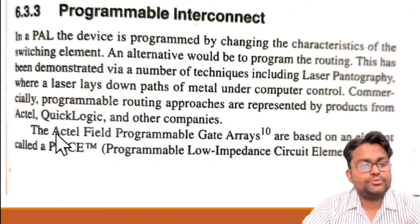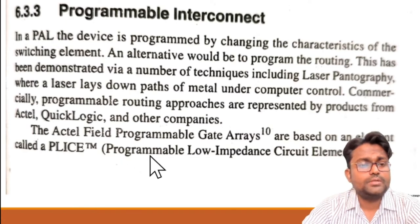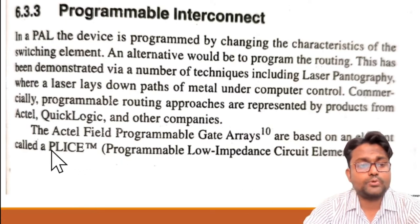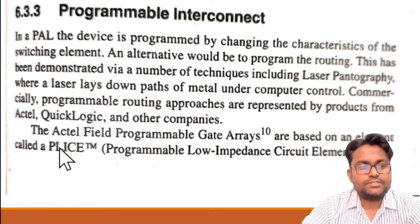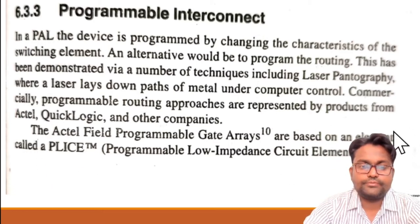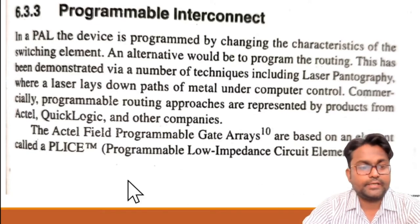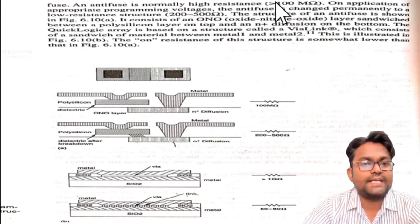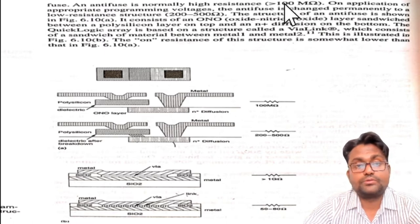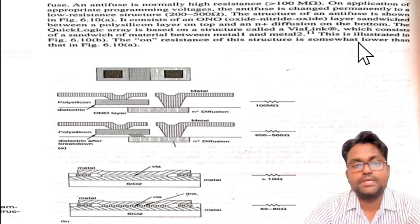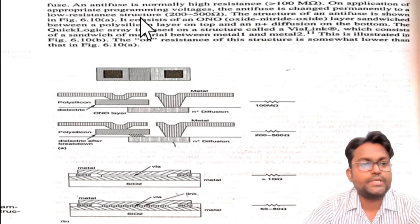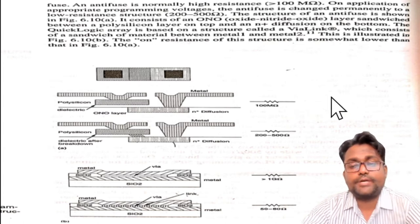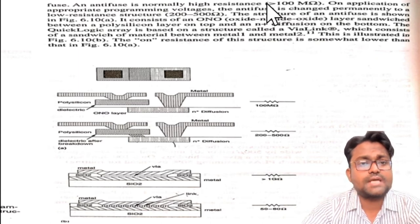The Actel FPGA uses an element known as PLICE — Programmable Low Impedance Circuit Element. PLICE is also known as an anti-fuse. PLICE is a very high resistance element, with resistance of more than 100 mega ohms. But if we apply laser pantography or another technique, we can convert this high resistance into a small resistance of around 200 to 500 ohms.